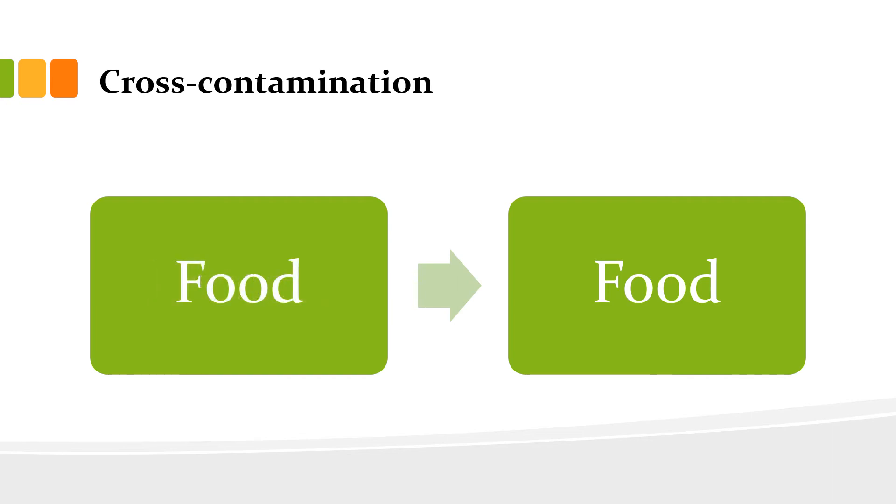Food to food. If you allow raw meat to drip onto ready to eat food on a lower shelf in the fridge.